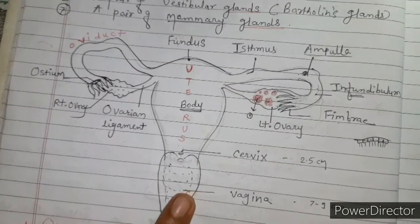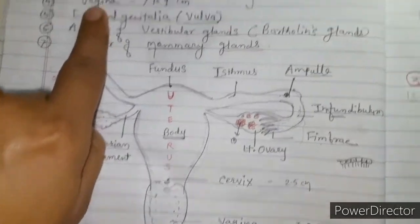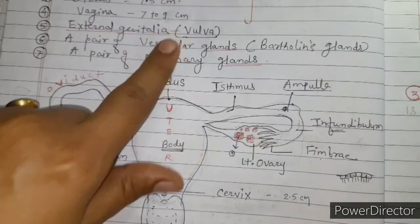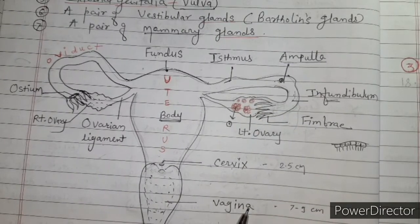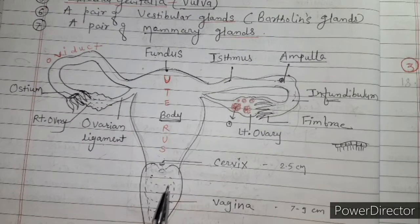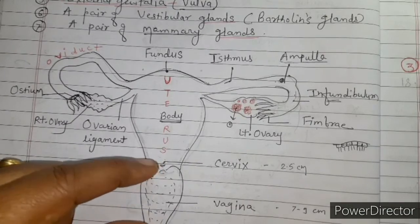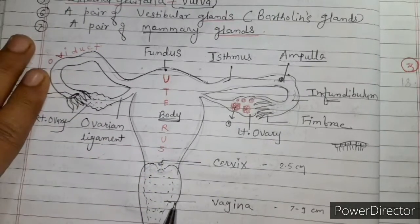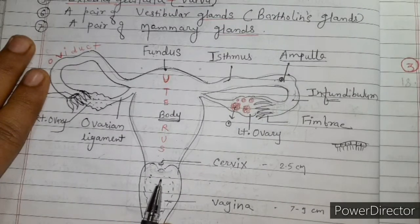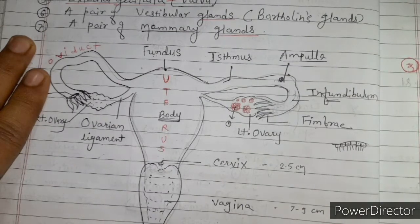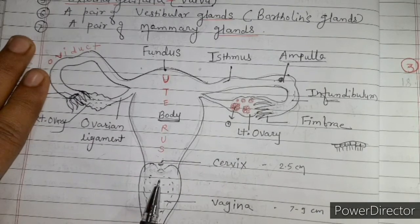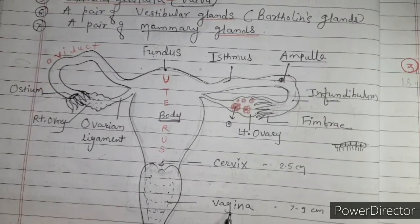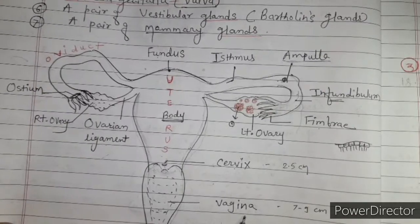The next part is the vagina, which is 7 to 9 centimetres in length. The vagina does not have any glands, but secretions from the cervix may enter it. The vagina is called the birth canal because the baby passes through it during parturition. The menstrual flow also takes place through this passage.